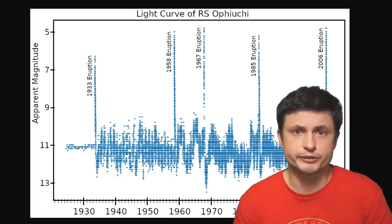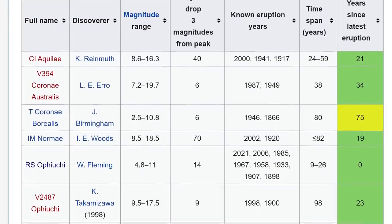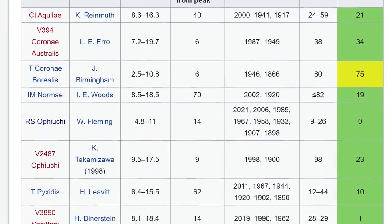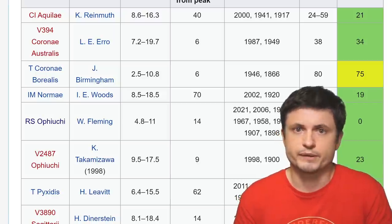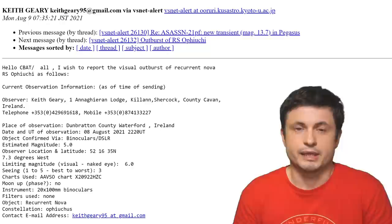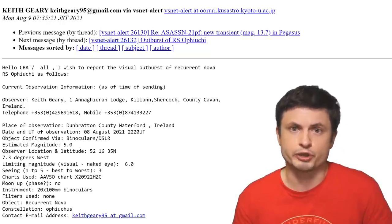But also because of the other 10 recurring nova we know of in the Milky Way galaxy, this one essentially is the easiest to catch and easiest to see. It's also one of the brightest. And this time it was caught, once again, by an amateur astronomer.